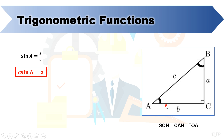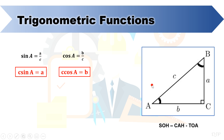Similarly, for the cosine function, we make use of CAH. So in this triangle, cosine of angle A is equal to side B over side C, or can be manipulated into the following form. Lastly, for tangent, we make use of TOA, which means that based on the given triangle, tangent of angle A is equal to side A over side B, which can also be expressed into this form.